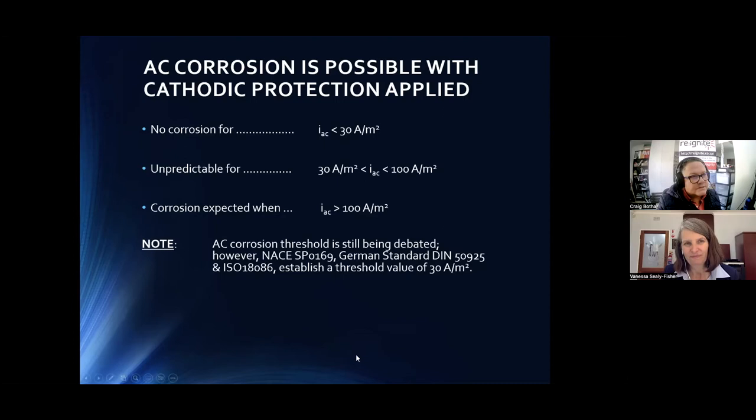To see these numbers on a screen you need to have the monitoring tools and facilities in place to measure AC current density. That takes us down a road we won't explore too much today, but in the design of cathodic protection systems we need to allow for the necessary tools to measure these values as and when concerned. There are two distinct issues: the corrosion aspect we're touching on today, and the safety/shock-related aspects that Daniel will cover in great detail.